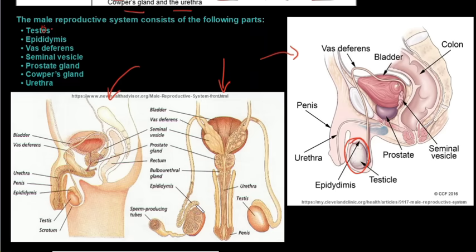Next is the epididymis. In the frontal view it sits just above the testes on either side. The epididymis stores the sperm cells until they mature — it's like a little preparatory school for sperm. It also secretes a mucus that helps with the sperm's motility, so for them to be able to move.